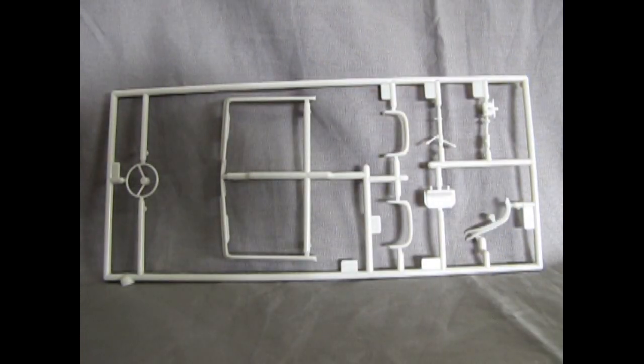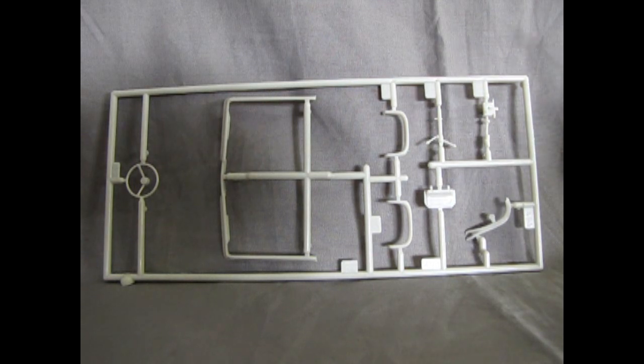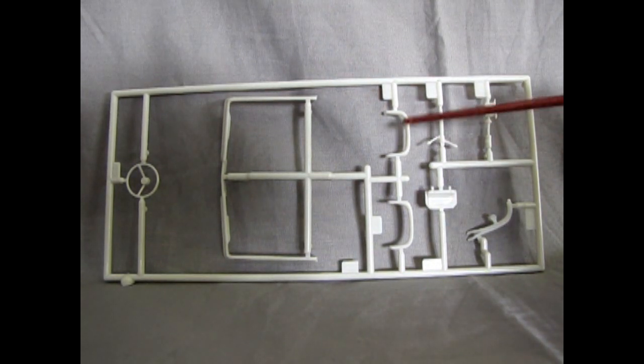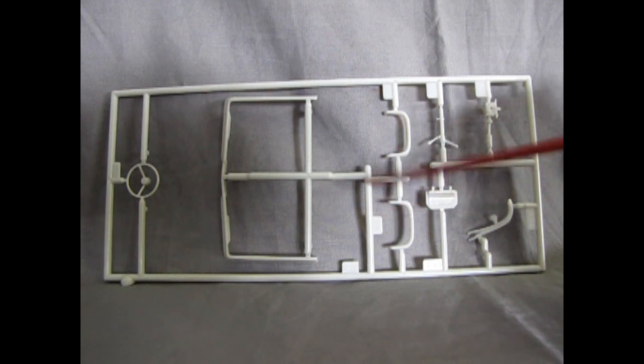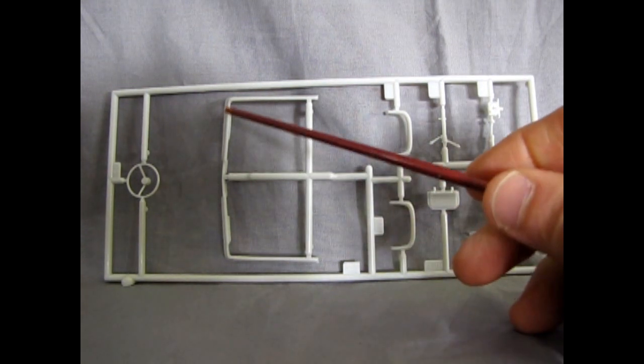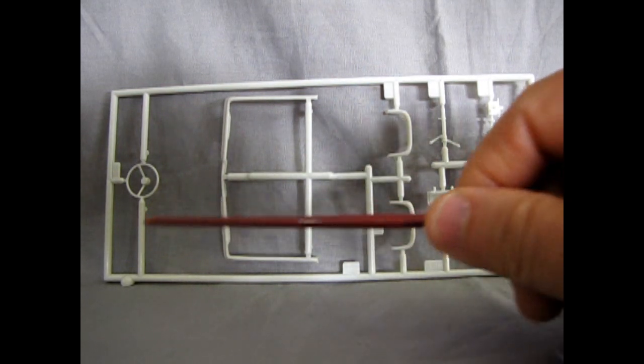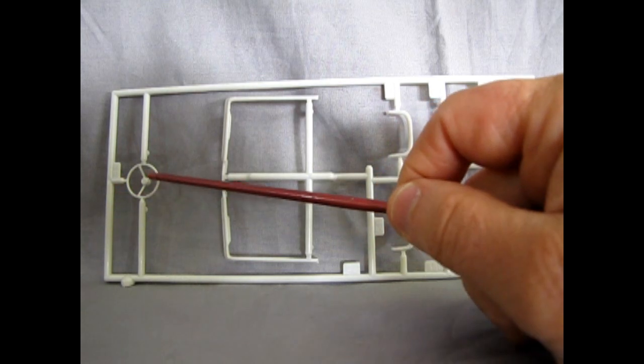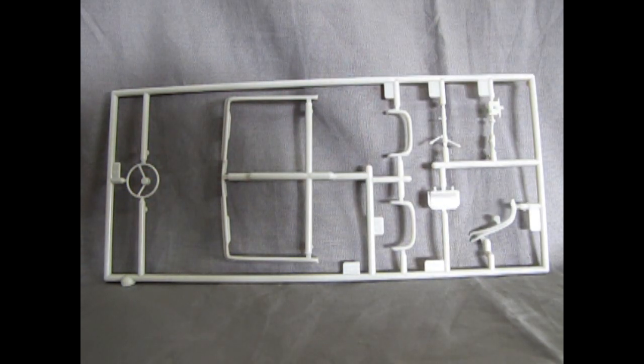Next set of sprue is kind of an interesting piece of parts tree here. There's the steering column. These are the pleated parts for the dashboard. A couple little panels and things for under hood. Some hoses. This section here is the bottom of the hood. And look, way out here, it's a long runner going there, a long runner going there, one out here. And this is your steering wheel. So kind of an interesting piece of sprue here.